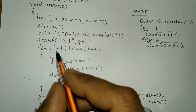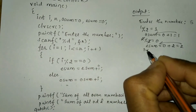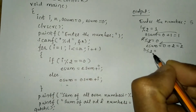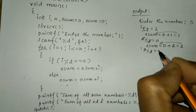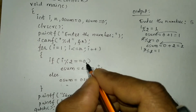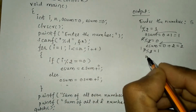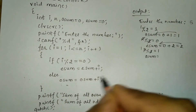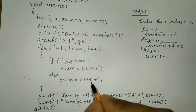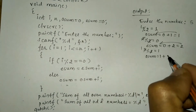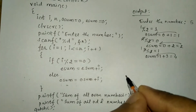Now i = 3. We check: 3 modulo 2 — 2 ones are 2, remainder is 1, which is not equal to 0, so the condition is false. The else part executes: osum = osum + i = 1 + 3 = 4. So 4 is stored in osum. Control returns to the for loop, incrementing i to 4.